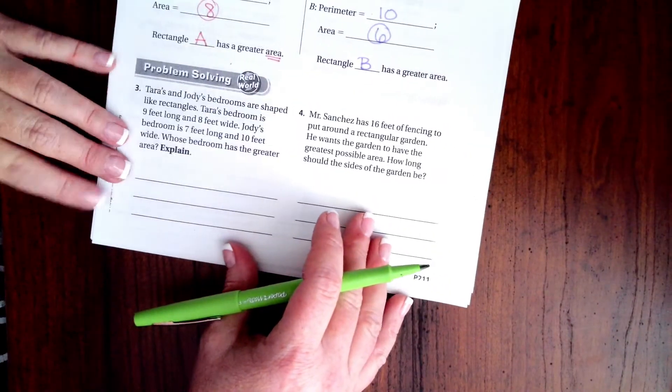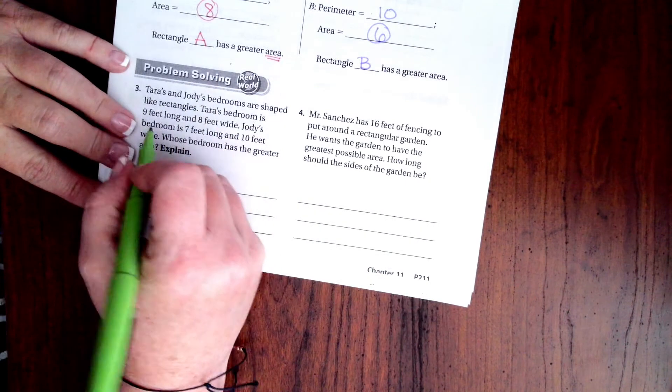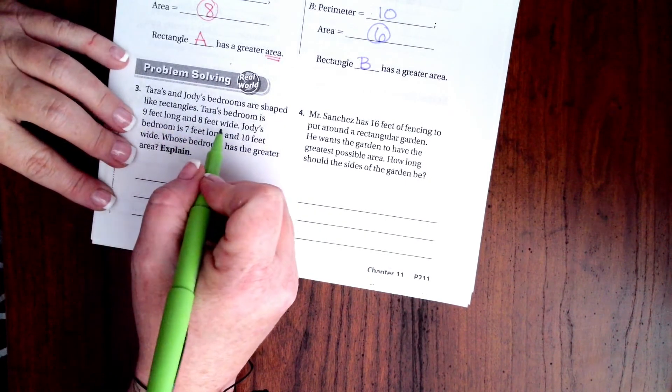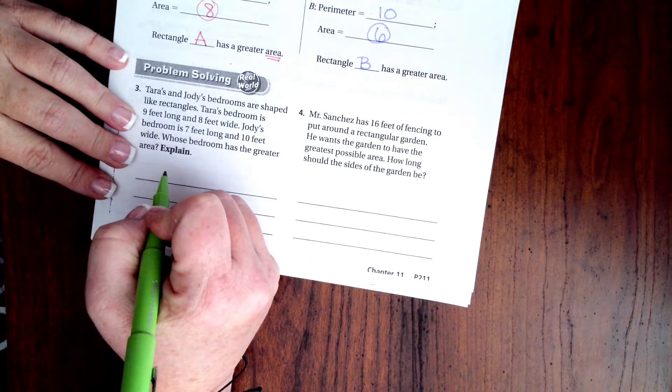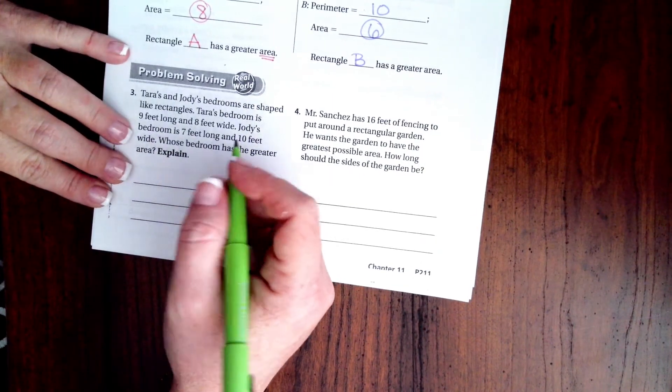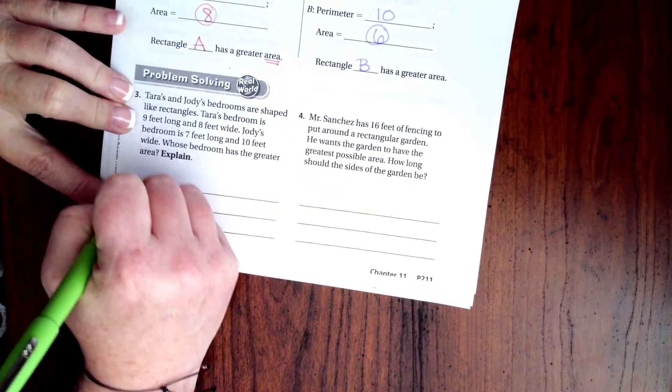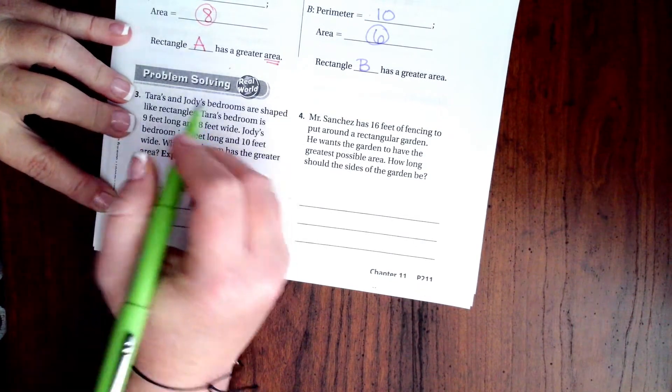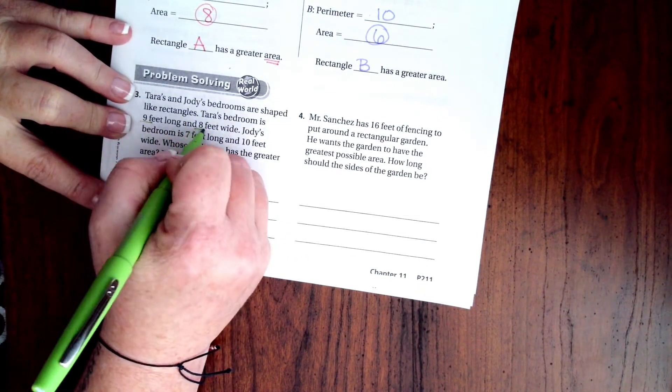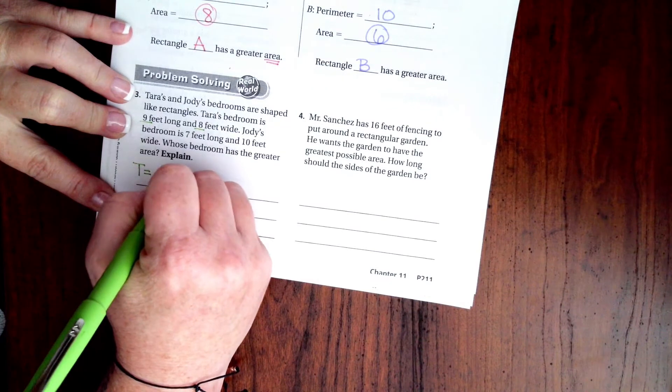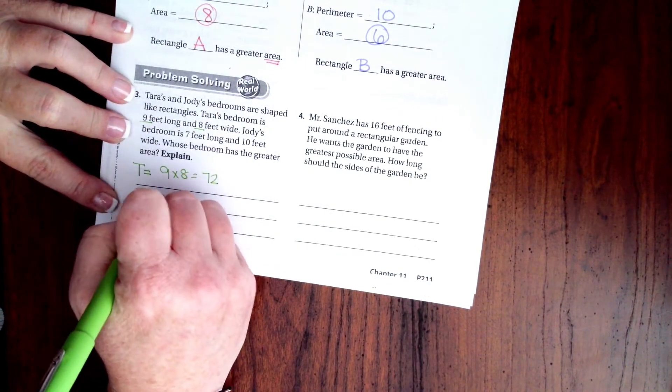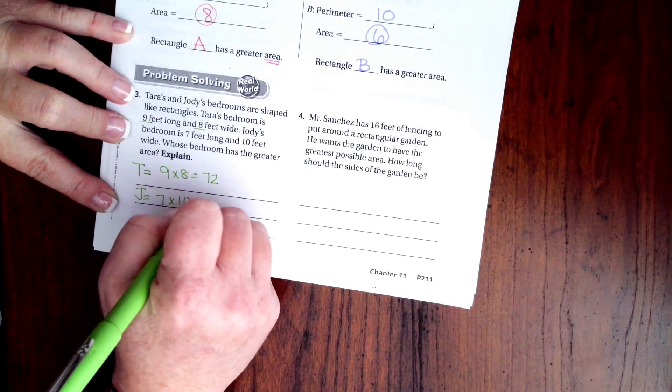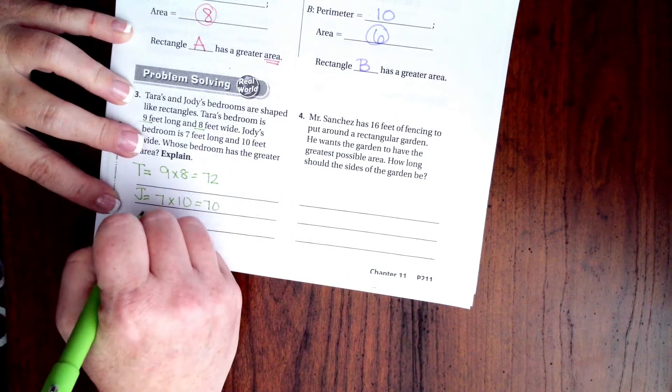Alright, Tara and Jody's bedrooms are shaped like rectangles. Tara's bedroom is 9 feet long and 8 feet wide. Jody's bedroom is 7 feet long and 10 feet wide. Whose bedroom has a greater area? Well, so, Tara's is 9 by 8, which is 72. And Jody's is 7 by 10, which is 70.